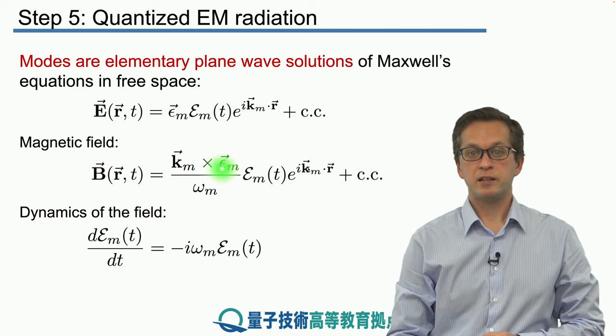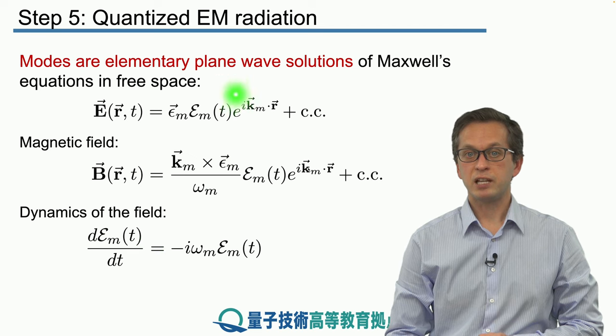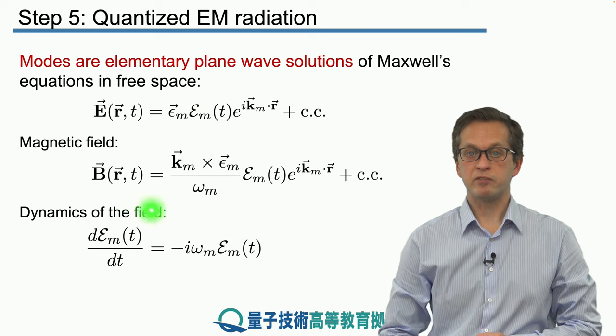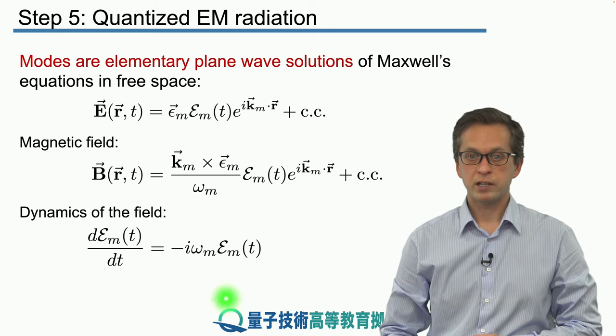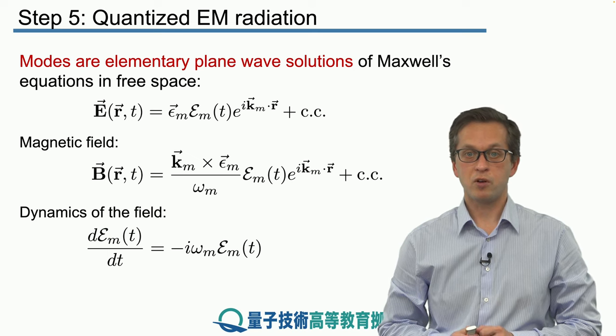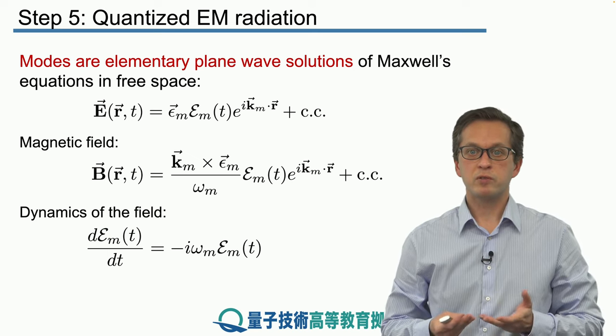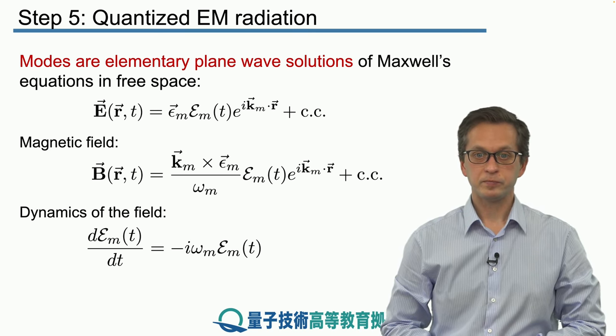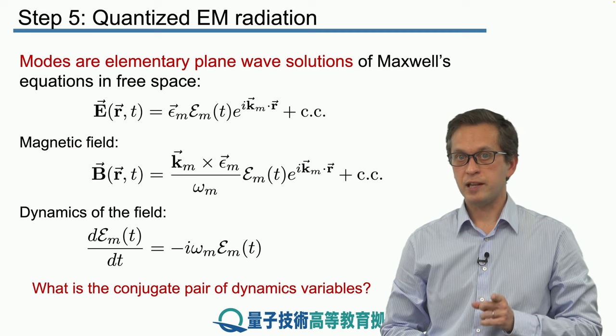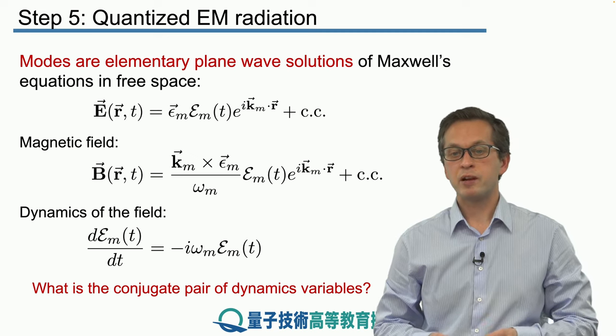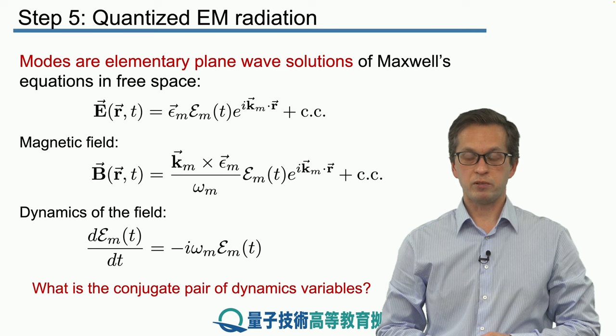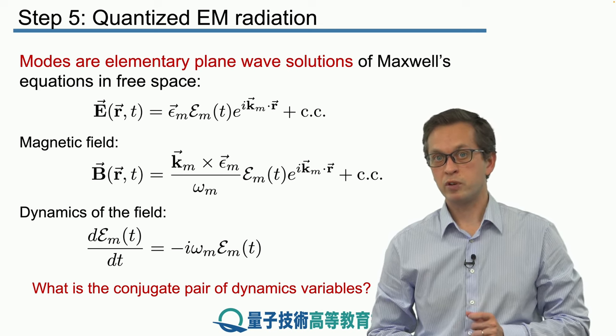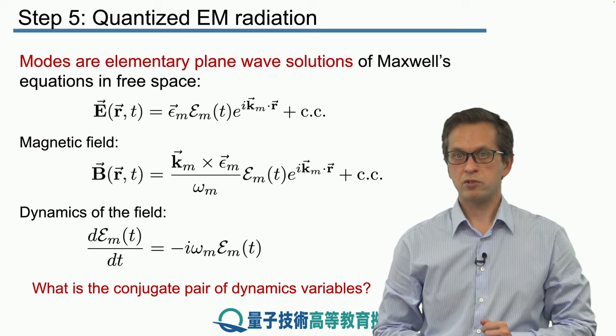We can check that the dynamics of the field—the dynamics of this complex amplitude capital epsilon—is given by: dℰ_m(t)/dt = -iω_m ℰ_m(t). You can recognize this as the equation of a simple harmonic oscillator, as expected for elementary harmonic plane waves. Now, to quantize the electric field, we must find pairs of conjugate dynamical variables. What are they here? It's not so obvious.